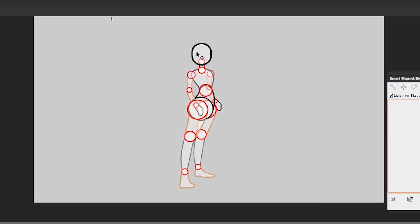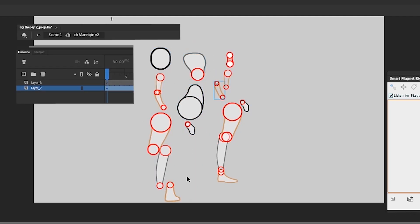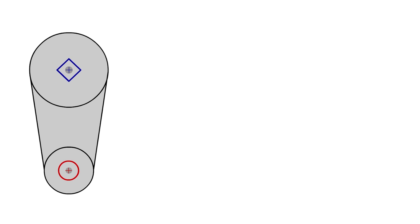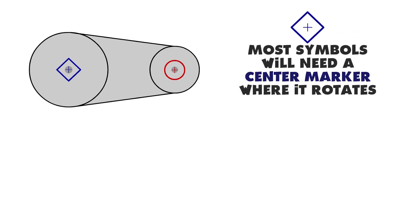So I've prepared a generic model ahead of time and I've already moved the pivot points on each of the symbols, so I can concentrate on the next steps of the rigging process. We'll need to set up center markers and magnet targets.